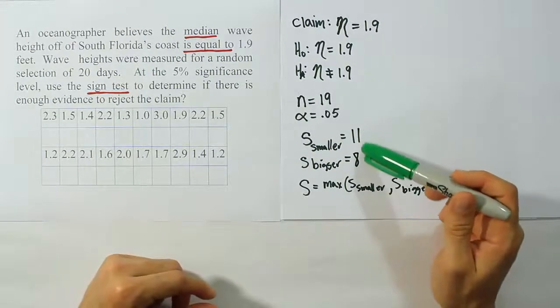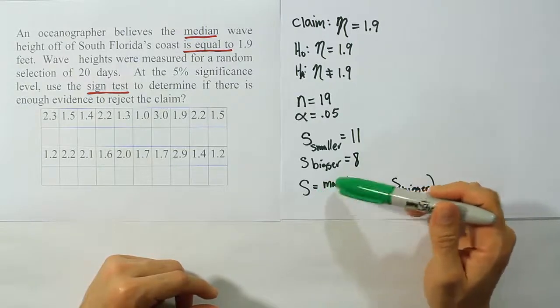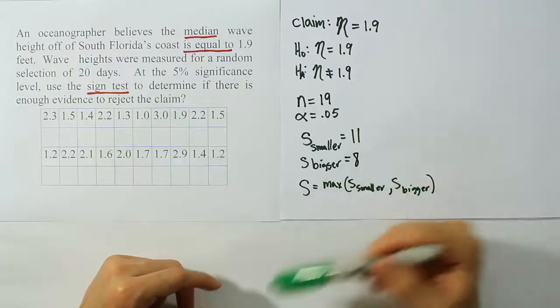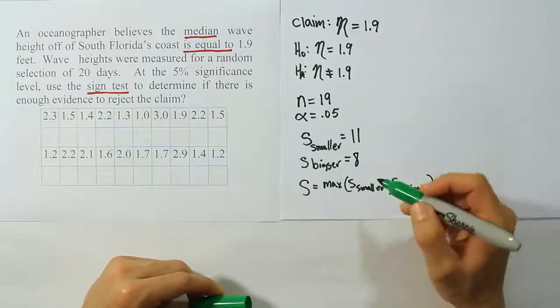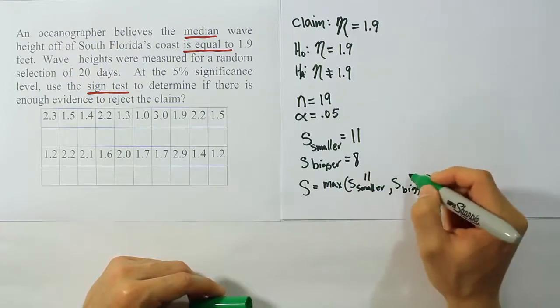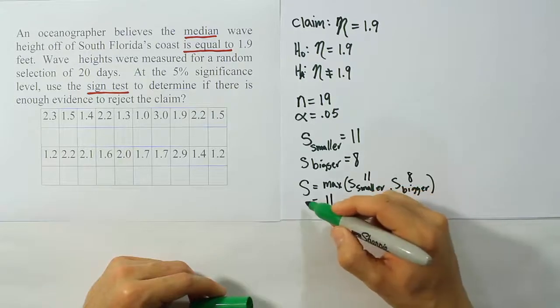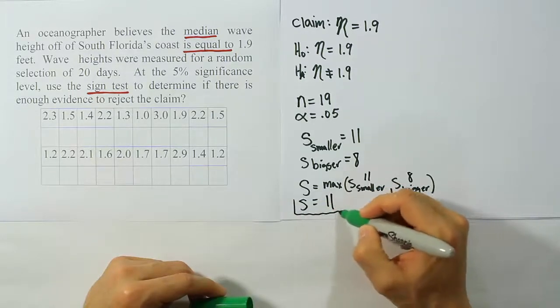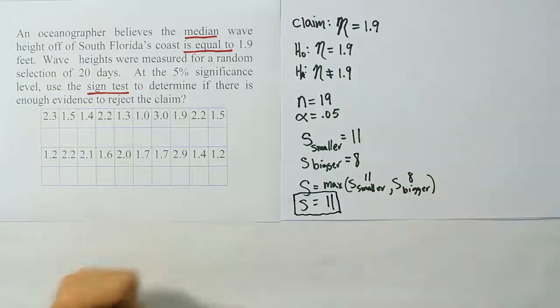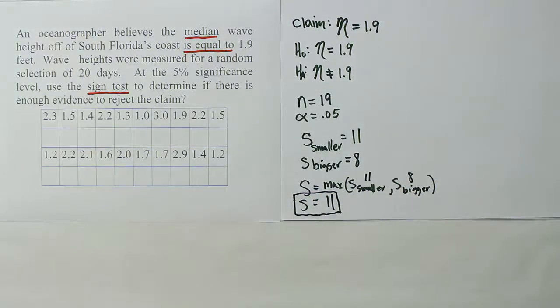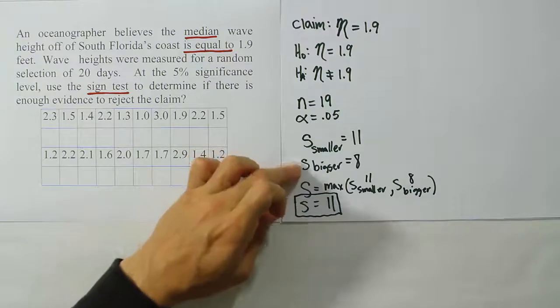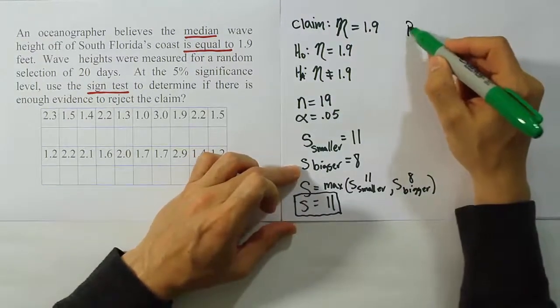We've counted properly. We have 11, we have 8. Now we're going to take S equal to the max of those two numbers. Since S smaller is 11 and S bigger is 8, the maximum is going to be 11. So that becomes your test stat. The notation we use for the sign test is S. S is our test stat for the sign test. Now from here what we want to do is to go on to our next step, which is probably the most difficult step in this procedure for most people, and that is to calculate the p-value for the test.